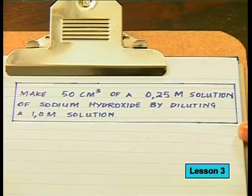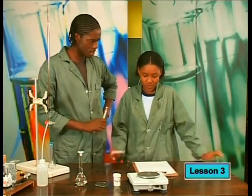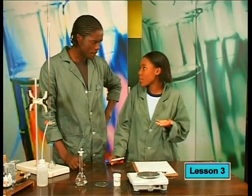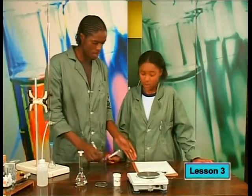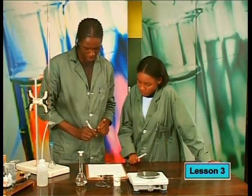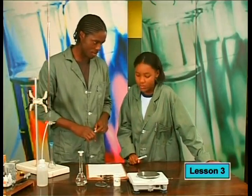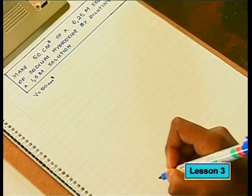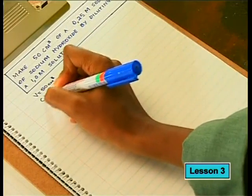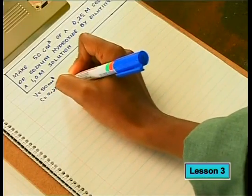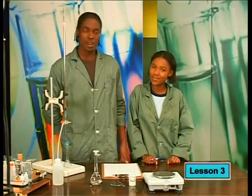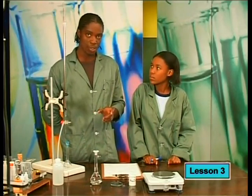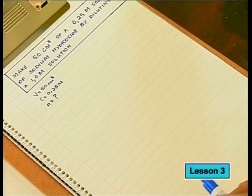The question says: make 50 centimeters cubed of a 0.25 molar solution of sodium hydroxide by diluting a one molar solution. The first step is to find the number of moles required in the dilute solution. The volume of the dilute solution is 50 centimeters cubed, and the concentration is 0.25 moles per decimeter cubed. Remember, concentration C equals the number of moles of solute N divided by the volume of the solution V.